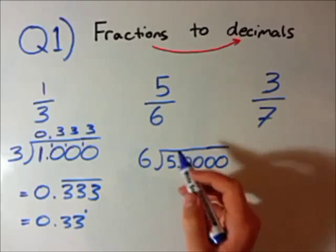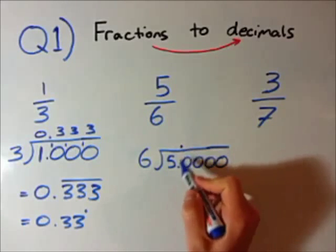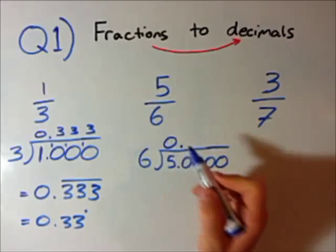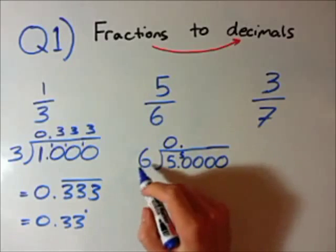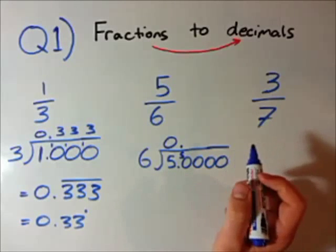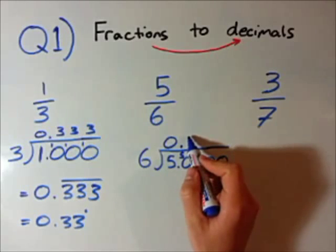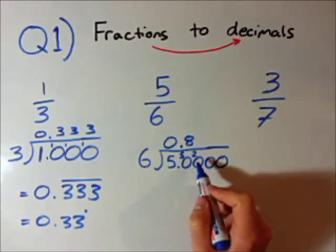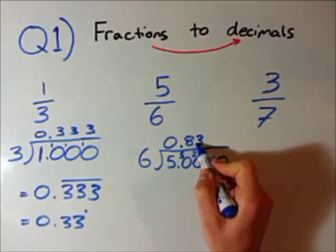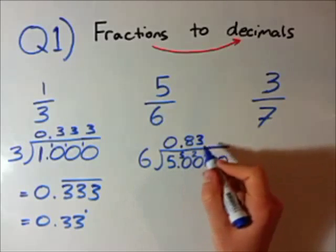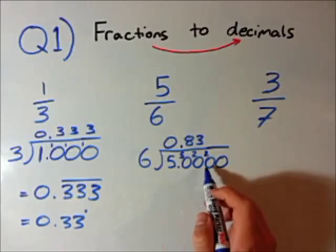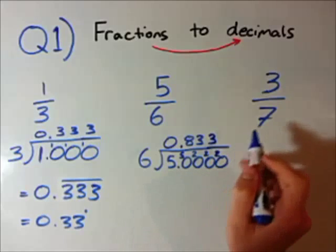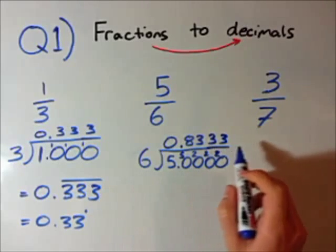First, I raise this decimal point directly above. How many times does 6 go into 5? None — carry the 5. How many times does 6 go into 50? Well, 6 times 8 is 48, so it goes in 8 times with a 2 remainder. How many times does 6 go into 20? It goes in 3 times with 2 left over — 6 times 3 is 18. How many times does 6 go into 20? 3 times with a 2 remainder. If I kept doing that, I would still get 333.